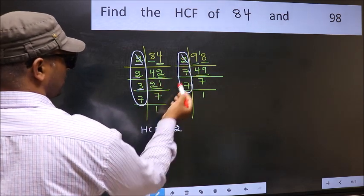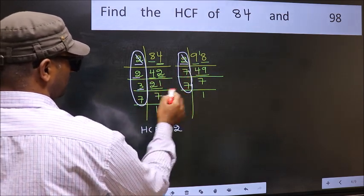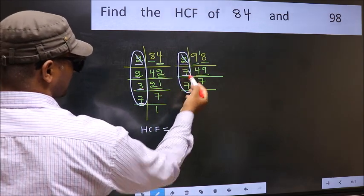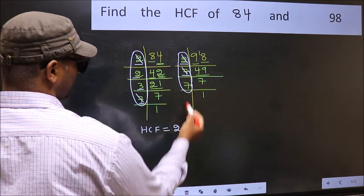Next number 3. Do we have 3 here? No. Next number 7. Do we have 7 here? Yes. So cut 7 right here.